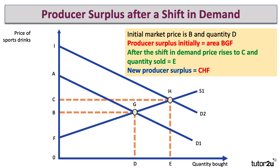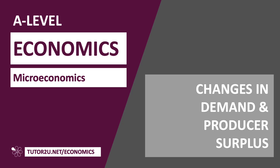So an outward shift in demand will cause an increase in producer surplus. It actually also causes higher consumer surplus, because there are more people in the market willing and able to pay. And if they pay price C, well, some people are willing to pay price I for those drinks — so that's actually a bigger area of consumer surplus, which is area I, C, H. Changes in demand and producer surplus — I hope you found this useful.